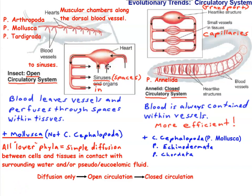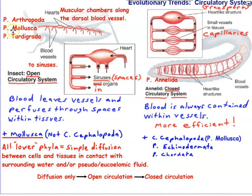In open circulation, the blood is not always contained within a vessel. The heart pumps blood into vessels, but then blood is released into spaces between tissues called sinuses — interstitial spaces between cells. It's eventually picked back up by blood vessels and returned to the heart, but it's not always contained within a vessel. This is seen in Arthropoda and most Mollusca — class Cephalopoda being the exception. Cephalopods like squid and octopi have closed circulation, as do annelids and tardigrades use simple diffusion.